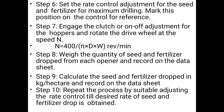Step 6: Set the seed rate control adjustment for seed and fertilizer for maximum dealing, and mark this position on the control as a reference point. Step 7: Engage the clutch or on-off adjustment for the hopper and rotate the drive wheel. We already know the number of revolutions of the ground wheel: n equals 400 divided by (π × d × W), in revolutions.